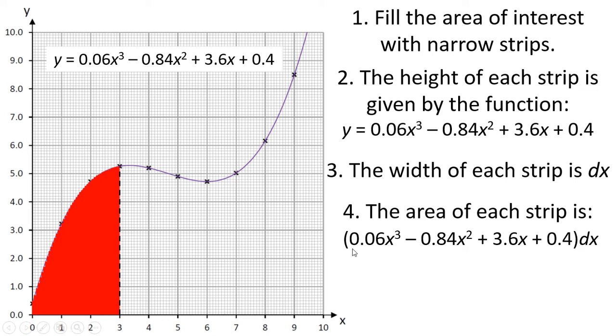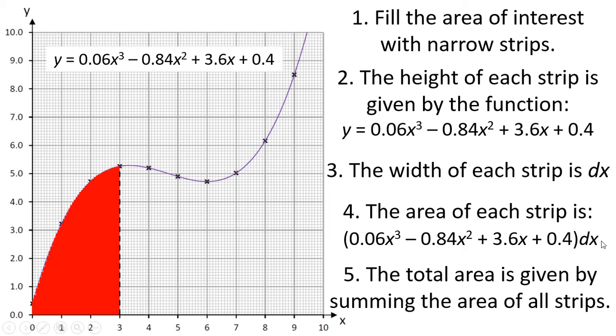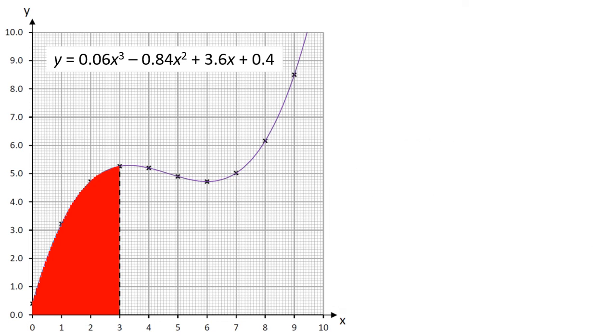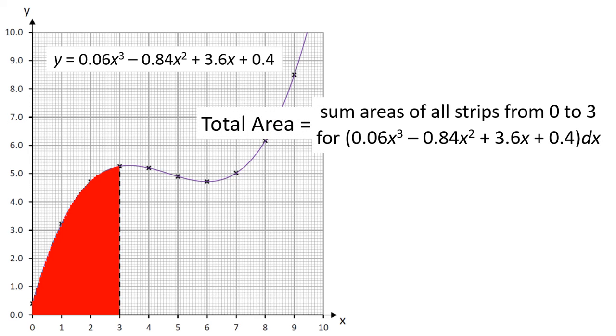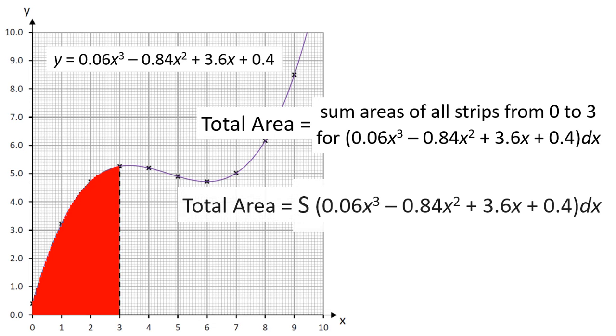So, total area is the height given by this function times by the width dx, and we add them all up to get the total area. We can write this down as being total area equals sum of all the strips from 0 to 3 for that function times dx.